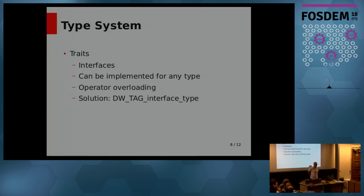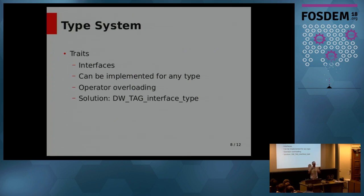A trait is like an interface. A trait is a description that has a bunch of methods — it's abstract. For instance, there's a trait used to implement operator overloading called 'Add' — it has one method, which is how to add two things. You can implement a trait for any type. All scalar types implement this Add trait, and you can also define a point type and implement the adding trait for it, defining that function. Then you can add points. Dwarf has something for this.